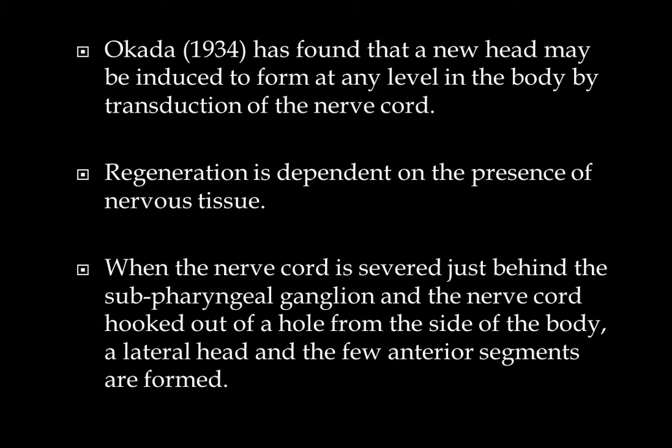It has been found that a new head may be induced to form at any level in the body by transection of the nerve cord. Regeneration is dependent on the presence of nervous tissue. When the nerve cord is severed just behind the sub-pharyngeal ganglion, also called the cephalic ganglion, and the nerve cord is hooked out from the sides of the body, a lateral head and a few anterior segments are formed.